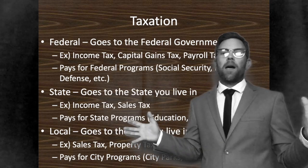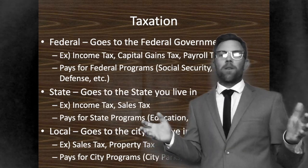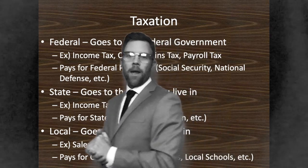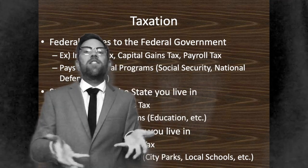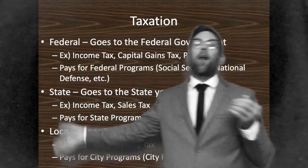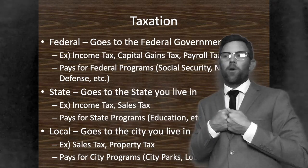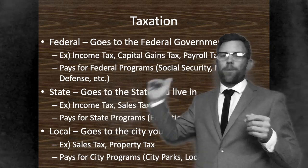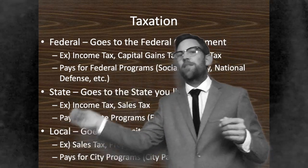At the local level, taxes are collected locally and go towards things that are locally provided to citizens of that community — in the form of sales tax and property taxes. One reason that houses around Oak Park High School are so valuable is because of the school system. The school system adds equity and property value to surrounding homes, so there are higher property taxes to pay for that school system. These local taxes pay for city programs, city parks, local schools, etc.